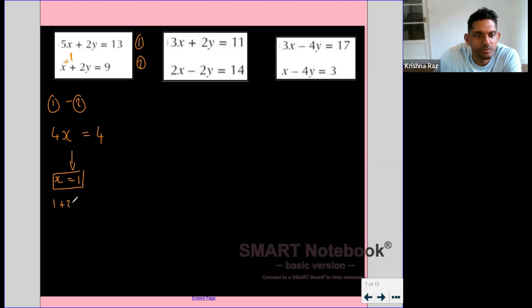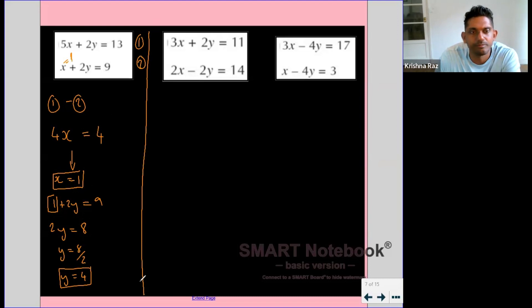So if 1 plus 2y equals 9, then 2y must equal 8, so y will be 4. So we have combined those equations to eliminate a variable.